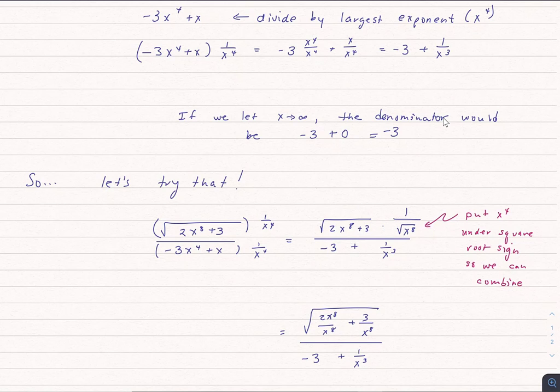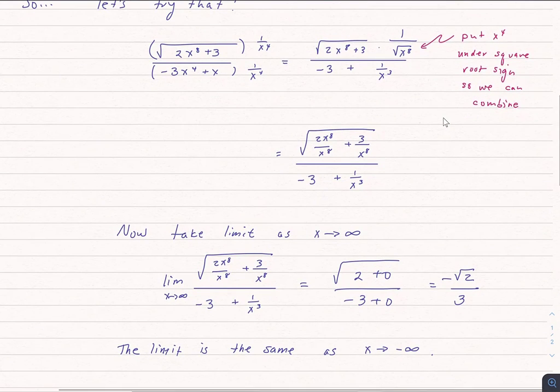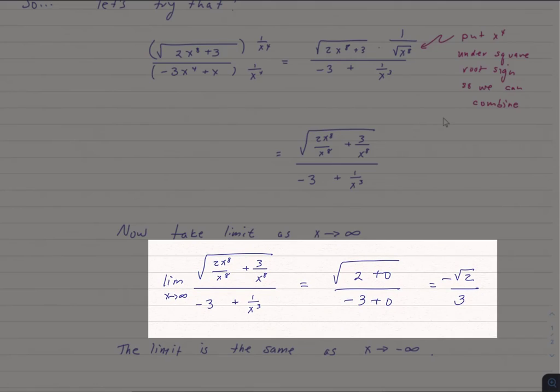All right, now let's take the limit. The limit as x approaches infinity. Well, 2x to the eighth divided by x to the eighth, that just is the number 2. But then 3 divided by x to the eighth, again, just like the 1 over x to the third, that goes to 0 as we let x get bigger and bigger and bigger.